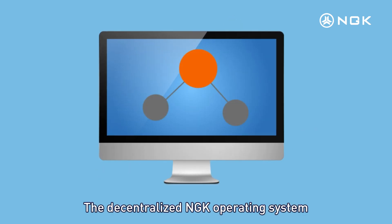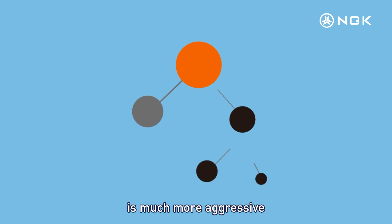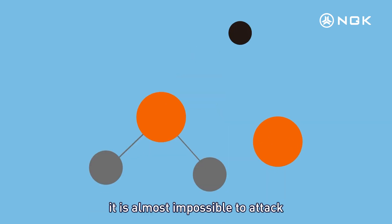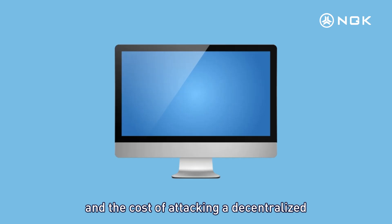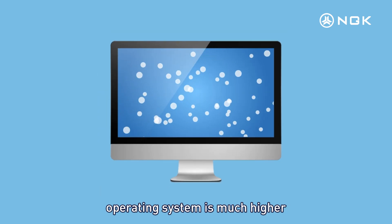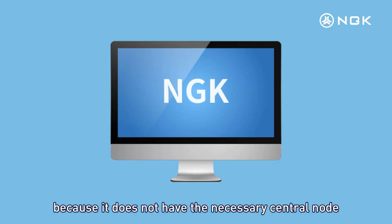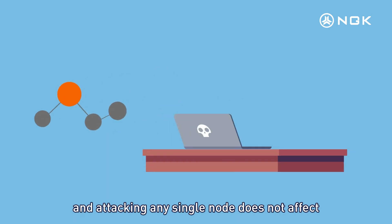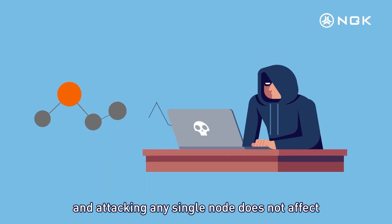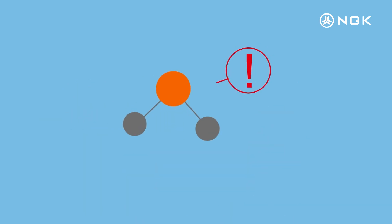The decentralized NGK operating system is much more resilient. It is almost impossible to attack all nodes at the same time, and the cost of attacking a decentralized operating system is much higher because it does not have a necessary central node. Attacking any single node does not affect the system, and the attacker cannot achieve their goal.